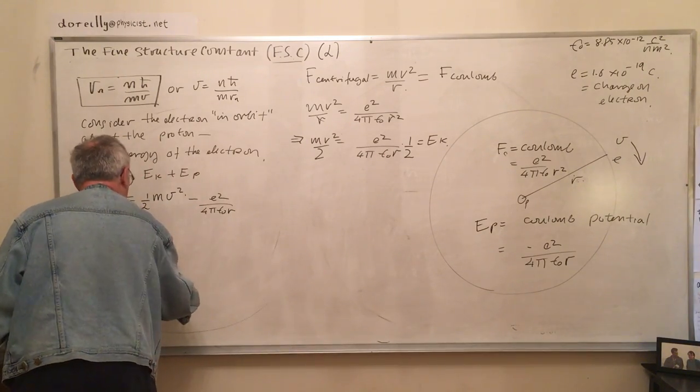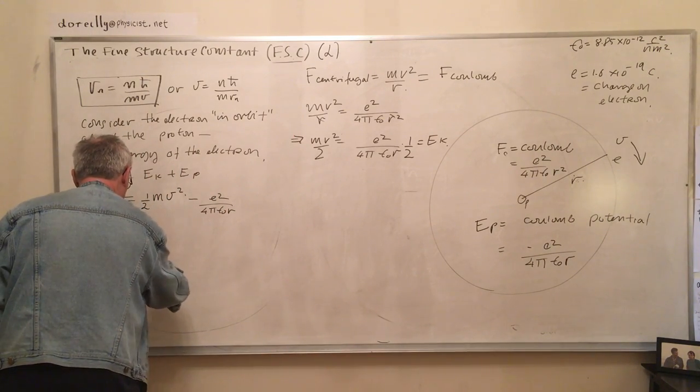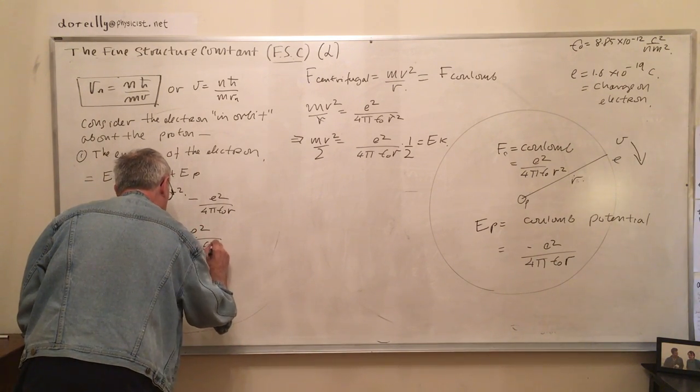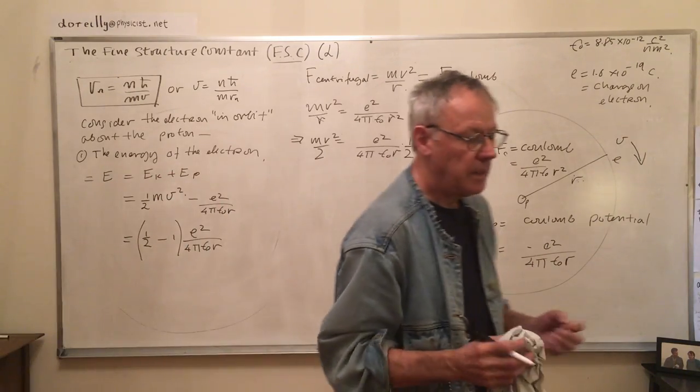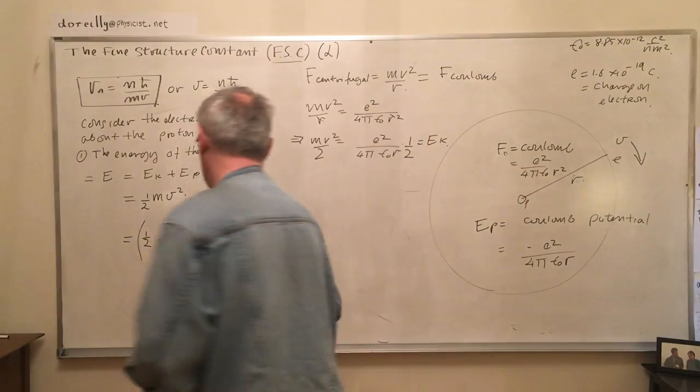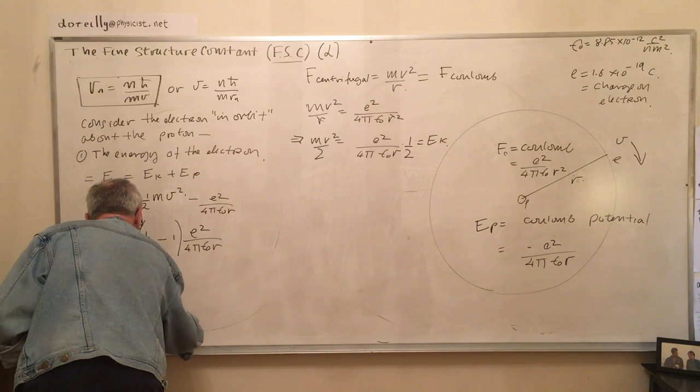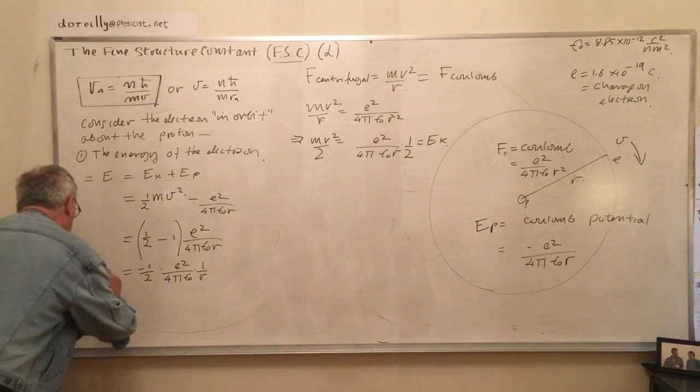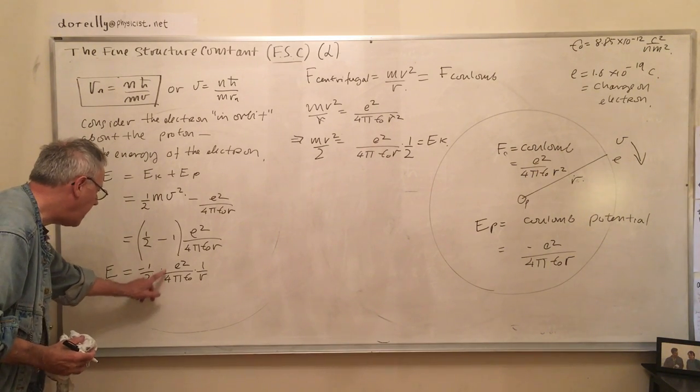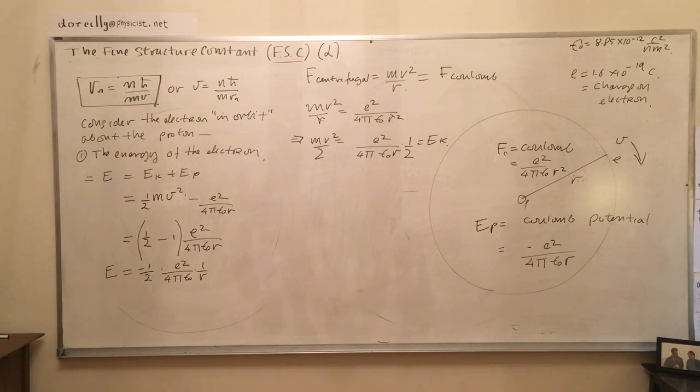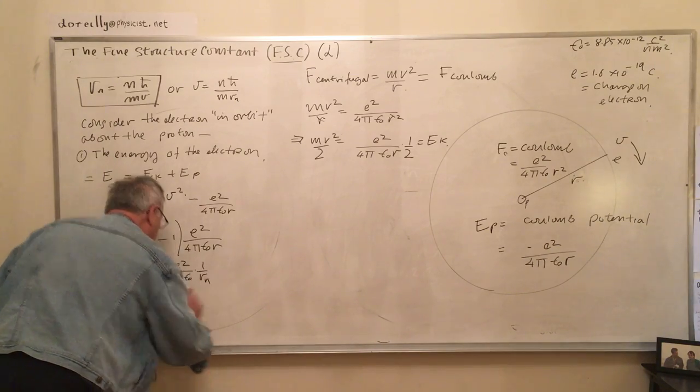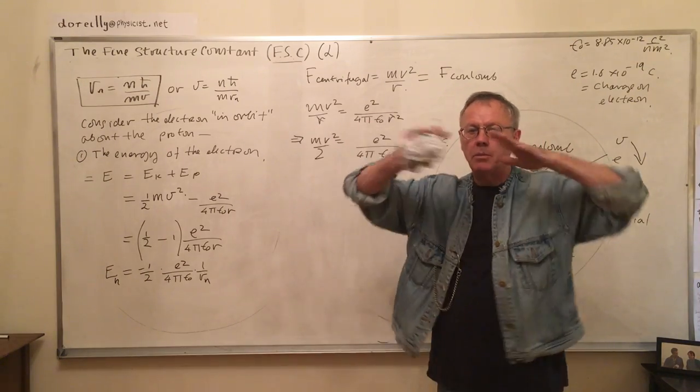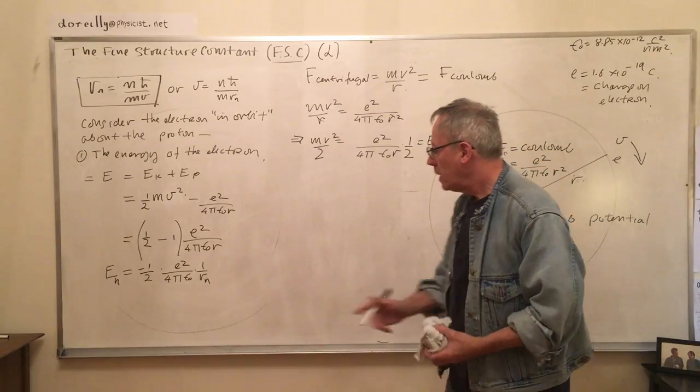So, mv squared over R is e squared over 4 pi epsilon zero r squared. So, if I divide that by 2, I get an expression for the kinetic energy. So, it's 1/2 times this quantity, mv squared, minus 1 times the same quantity. And this is actually just a variable here in saying that the kinetic energy is distributed equally between potential and kinetic. So, that the energy of the system is given by this expression. Negative 1/2 e squared over 4 pi epsilon zero R. But, as we said previously, there are different values for R.